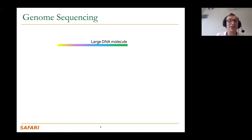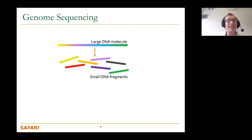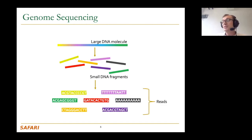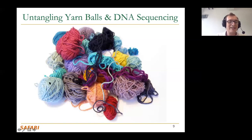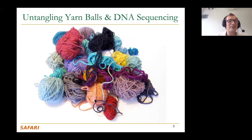Pictorially, you have a large DNA molecule — not a neat straight line but like a yarn ball. The machine chops the DNA into small DNA fragments called reads, and these reads need to be mapped so you can make sense of them. Untangling yarn balls is a good analogy. Your DNA is curled up in your cells, and when you take a sample there may be mixes of DNAs from different species — from viruses or bacteria — making the picture even messier.